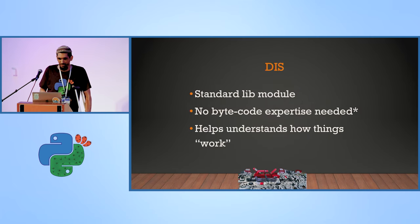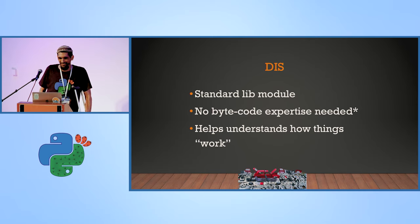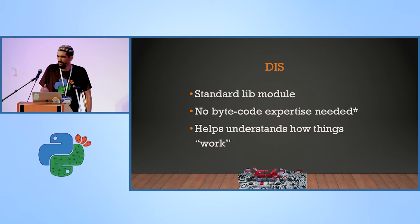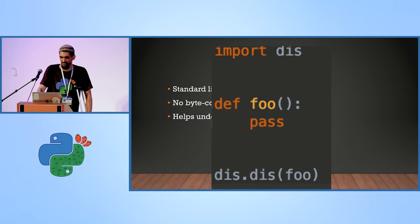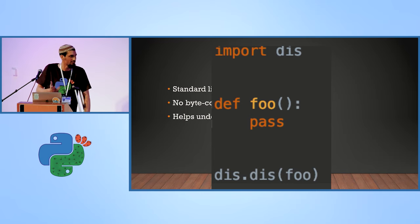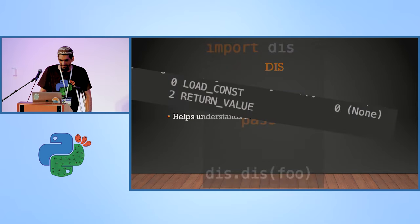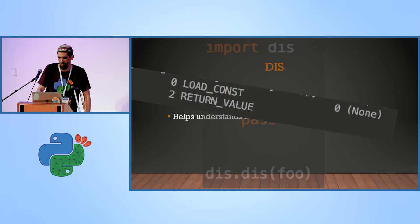Now the second part of the talk — we're going to talk about the dis module. Everybody can use this module; it's super easy to use and understand, because Python bytecode is really simple. This is how you use it: you have a function and you pass it to the dis module — dis has a dis function and you use it. This is the output of the foo method — it just loads None and returns it, because it doesn't do anything.